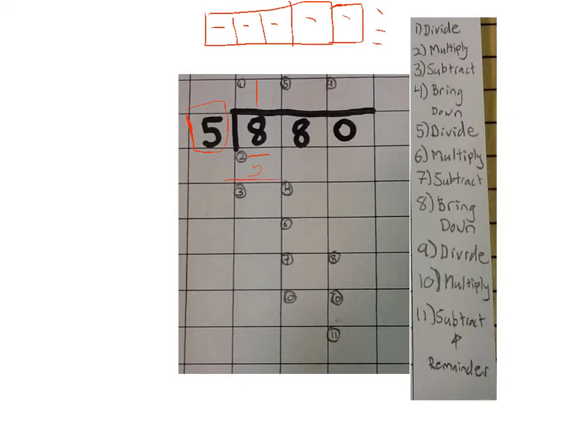Now step number 3, we got subtract. So we're going to subtract 8 minus 5 and we're going to bring it down to box 3 here. So 8 minus 5 is 3.